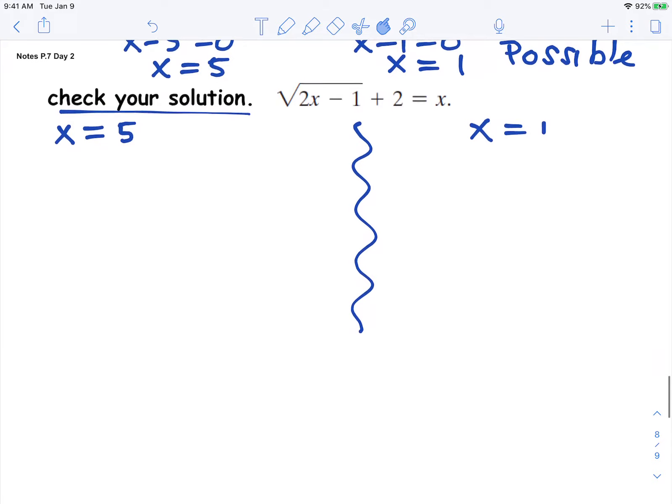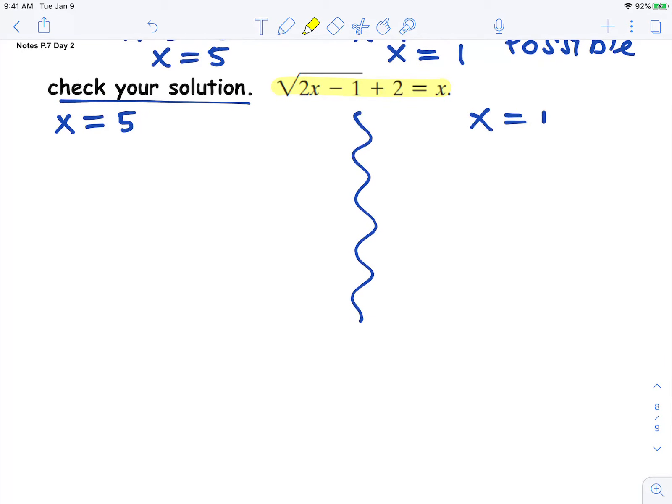So when you check a solution, you're substituting it into the original equation. So I highlight that in yellow. So 2 times 5, we're replacing that x with 5, minus 1, plus 2, replace the x with 5.